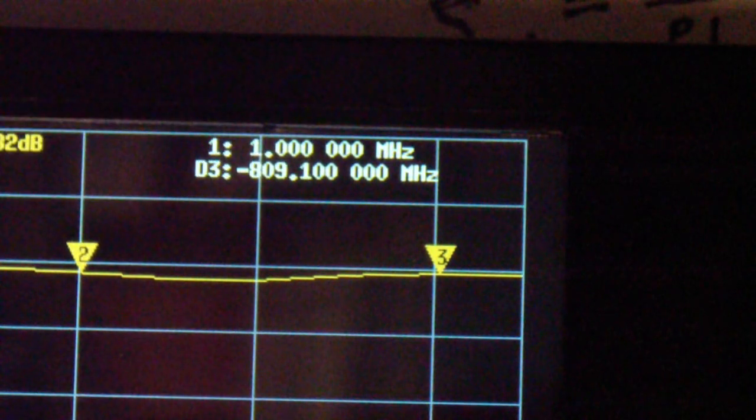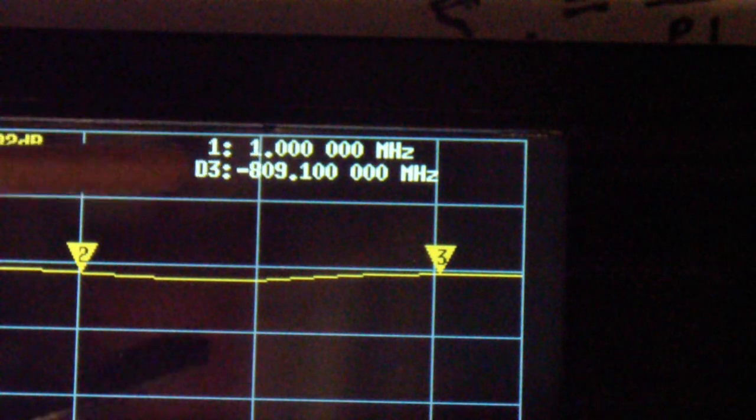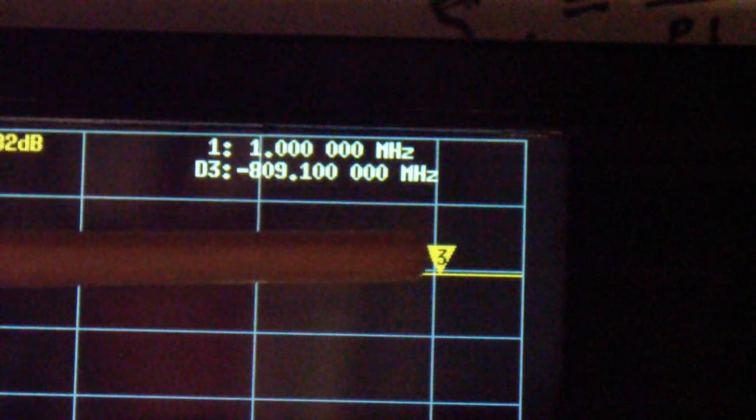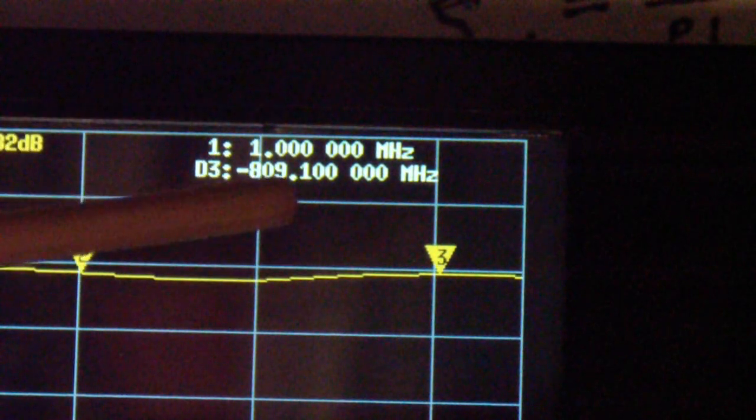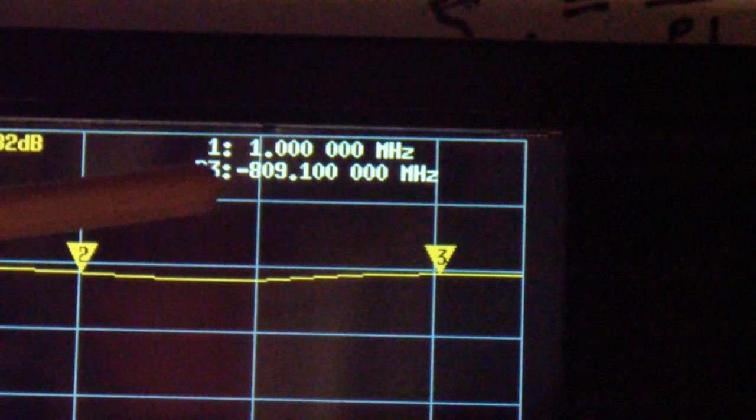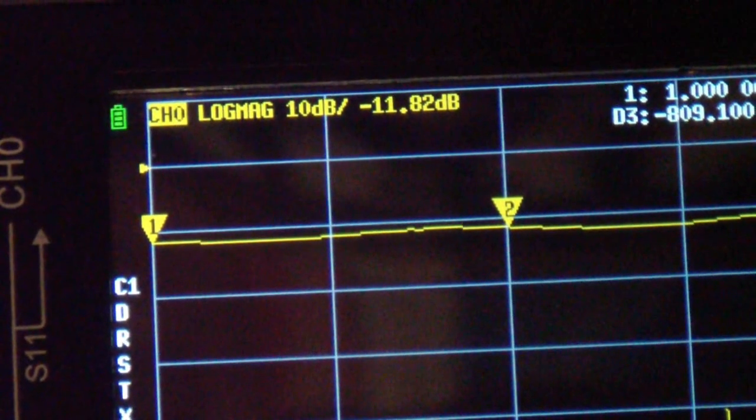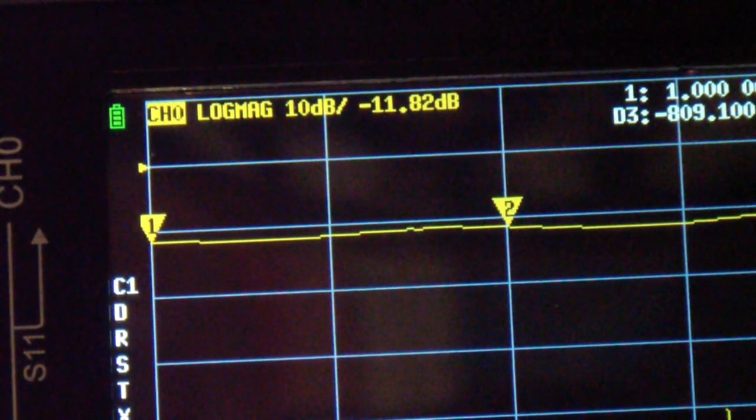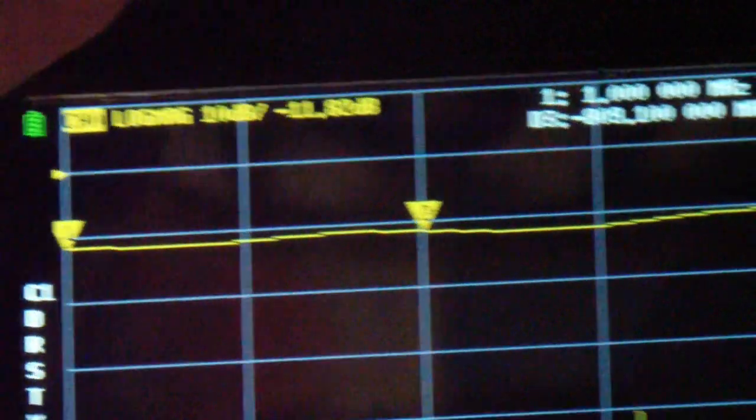And then it says D3. What that stands for is delta 3. In other words, what it is saying is that marker one, the one that's shown at the top, is 809.1 megahertz from marker three. Delta to three is minus 809.1. In other words, 809.1 megahertz less than this marker is where marker one is. So I thought I would show you that because you can get the delta display, and if you want to know the distance in frequency between two markers on the NanoVNA, it's displayed right there.